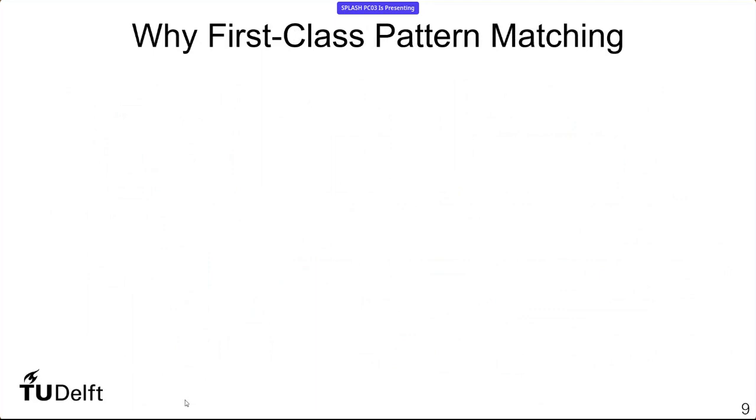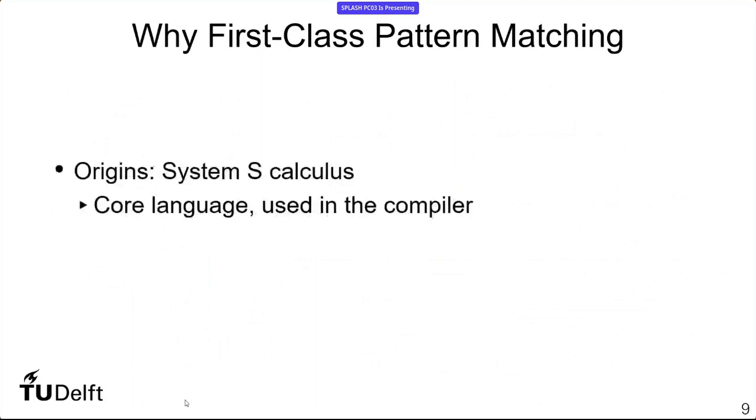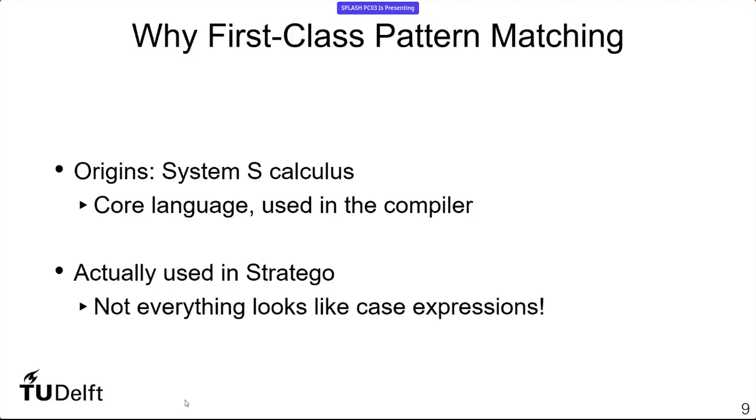So where did this come from? Why do we even have this first-class pattern matching? This comes from the system S calculus, which was a core calculus for rewrite systems. This was used to define the semantics of Stratego and is therefore also used in the compiler. It became the core language of Stratego. Because it's the core language of Stratego and not an intermediate representation, these strategy expressions are entirely available to you as a user, which means that people actually use these in Stratego, not just in the way that I've shown before, but these different elements, introducing new names, matching, giving different choices, they're used arbitrarily within the code.